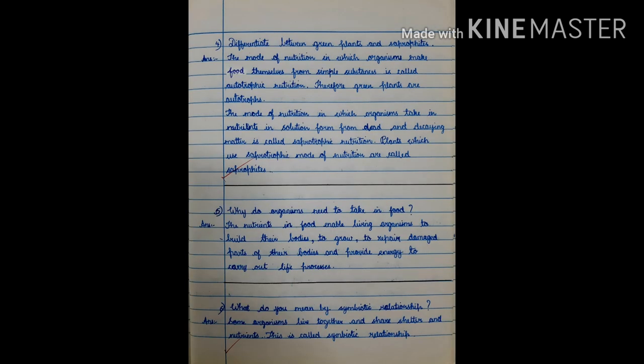Fourth question. Differentiate between green plants and saprophytes. Answer. The mode of nutrition in which organisms make food themselves from simple substances is called autotrophic nutrition. Therefore, green plants are autotrophs. The mode of nutrition in which organisms take in nutrients in solution form from dead and decaying matter is called saprotrophic nutrition. Plants which use saprotrophic mode of nutrition are called saprophytes.